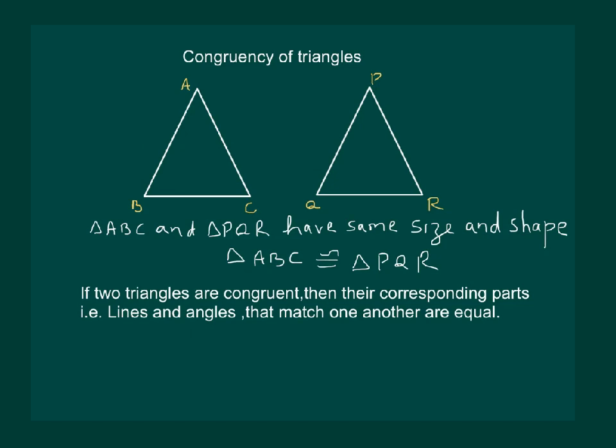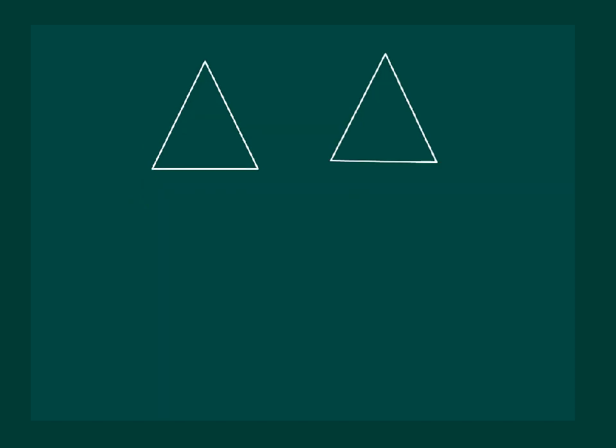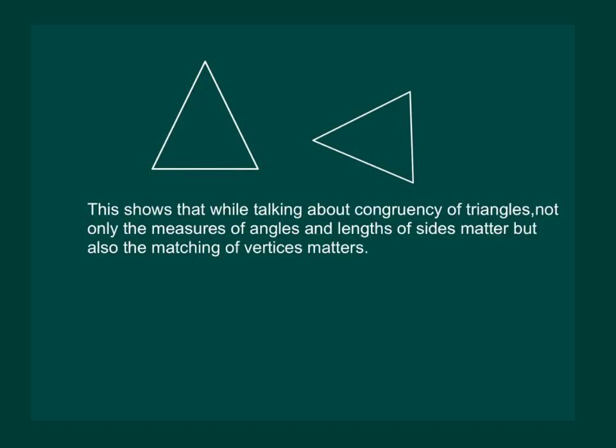Let us try to understand why we are saying corresponding parts that match one another. Firstly, let us check if these two triangles are congruent. Clearly, the two are congruent to each other. But what happens if we rotate one of them and try to place them on one another? Then the other vertices may not coincide with the corresponding vertices of the other triangle. Hence, while talking about congruency of triangles, not only the measures of the angles and lengths of the sides matter, but also matching of the vertices matters.